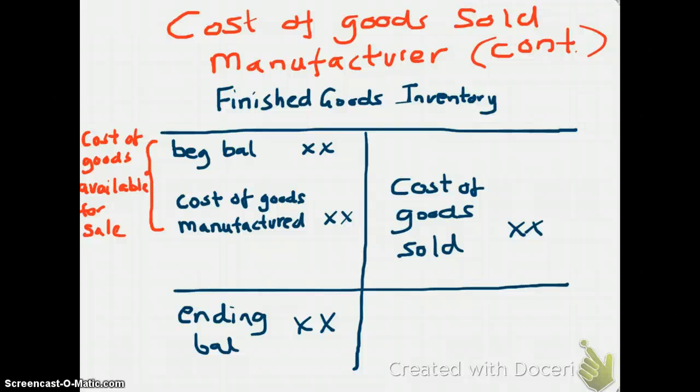One more term: beginning balance of finished goods plus cost of goods manufactured is called cost of goods available for sale. For example, if you had 100 items in beginning inventory and manufactured 1,000 items, you have 1,100 available for sale. If you sold 700 items, 400 remain in ending inventory. Cost of goods sold is what appears on the manufacturer's income statement.